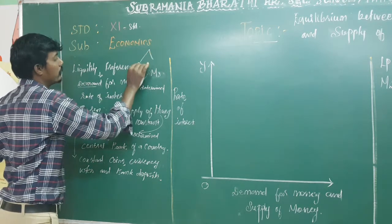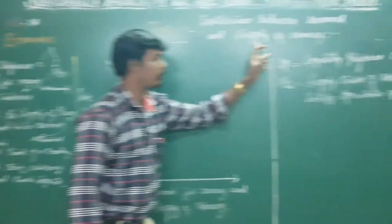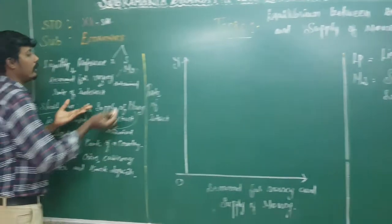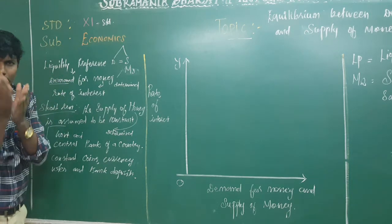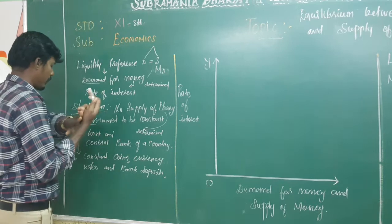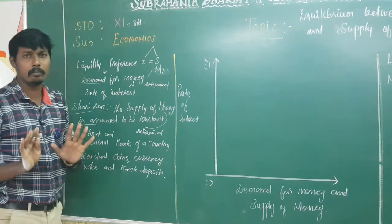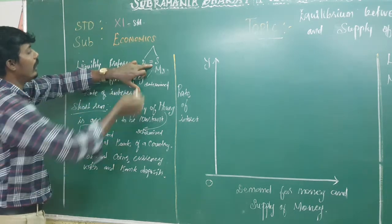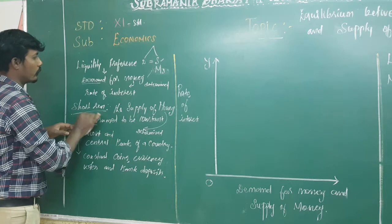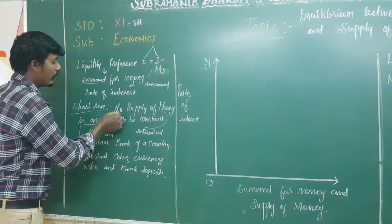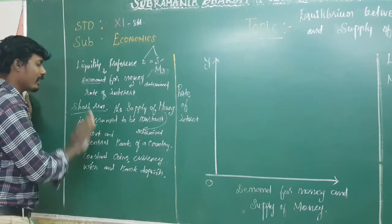There are two categories: the demand side and the supply side. Demand and money supply are the differentials. Equilibrium is reached when demand side equals supply side equilibrium.